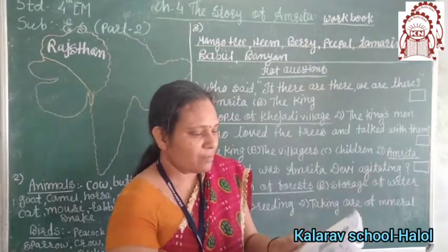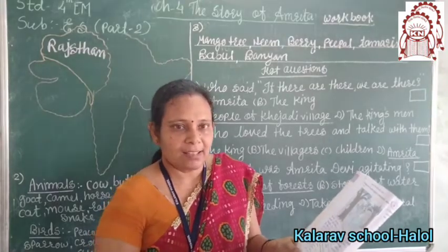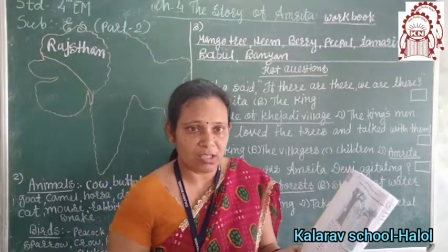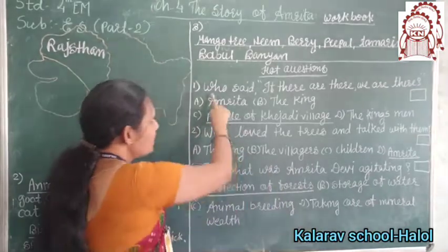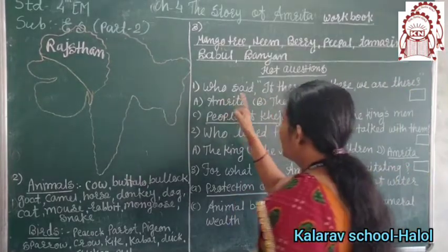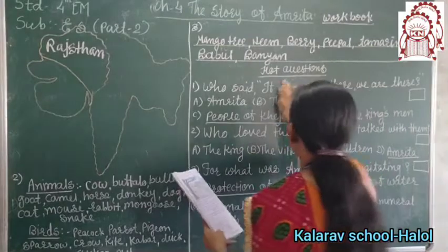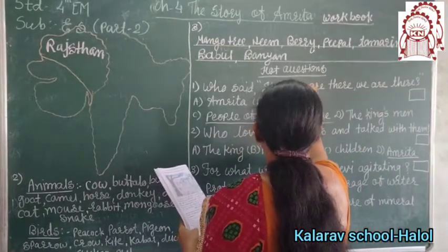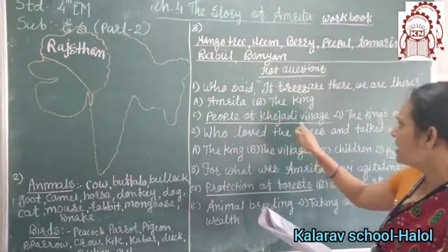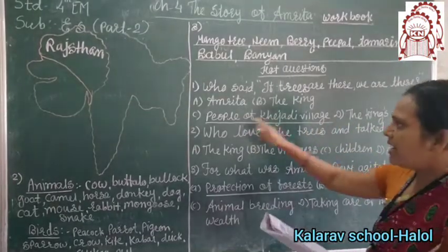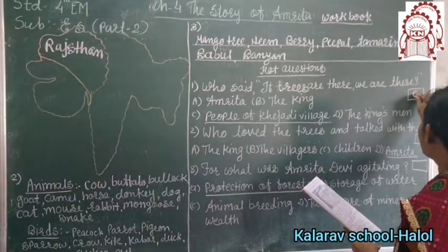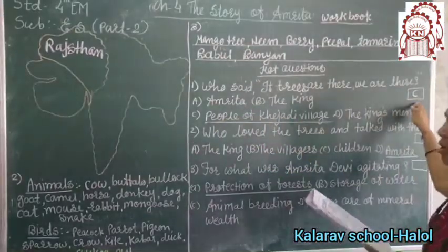Look at the picture. Have you seen the picture properly, children? Now we go ahead. Who said 'if trees are there, we are there'? Was it Amrita, the king, the people of the Khejri village, or the king's men? It was spoken by the people of the Khejri village. You do the underline and write in the box also.